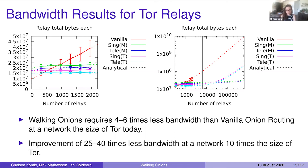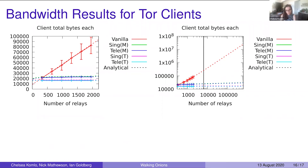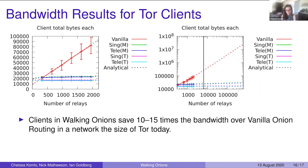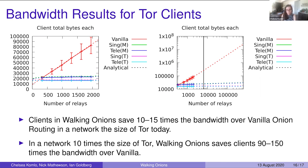As the network size grows, the savings to relays further increases — we see 20 to 40 times less bandwidth overhead for relays on a network ten times the size of TOR. For clients, the picture is even better. At a network the size of TOR today, clients in Walking Onions save 10 to 15 times the bandwidth over vanilla routing. On a network ten times the size of TOR, clients save 90 to 150 times the bandwidth over vanilla. The improvements for Walking Onions compound as the network size grows.